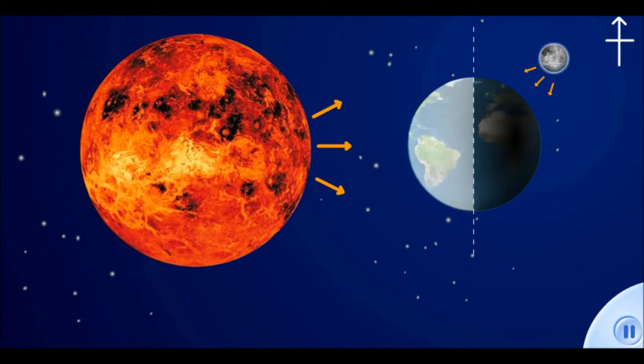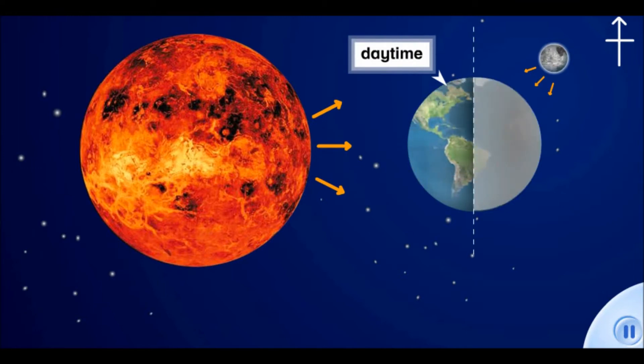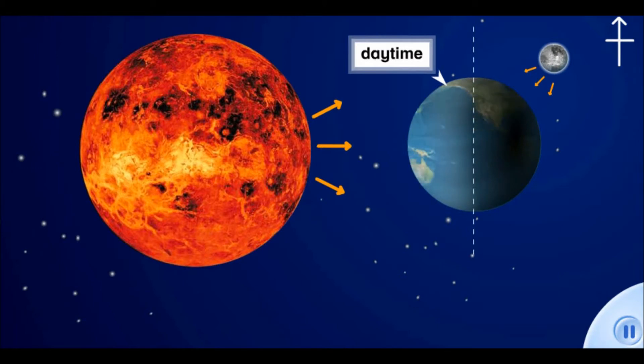When the Earth faces the Sun, that part of the Earth experiences daytime. On the other hand, when the Earth faces away from the Sun, that part of the Earth experiences nighttime.